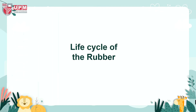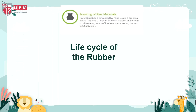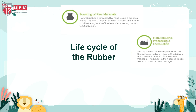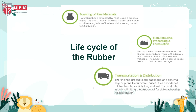The life cycle of rubber. Step 1 — Sourcing of Raw Materials: natural rubber is extracted by hand using a process called tapping, which involves making an incision on alternating sides of the tree and allowing the sap to fill up a bucket. Step 2 — Manufacturing, Processing and Formulation: the sap is taken to a nearby factory to be filtered, hardened, and mixed with additives which extend product life and make it valuable. The rubber is then poured to size, heated, cooled, cut, and packed. Step 3 — Transportation and Distribution: the finished products are packaged and sent via ship or plane to warehouses. As a provider of rubber, products are bought and sold in bulk, limiting the amount of fossil fuel needed for distribution.